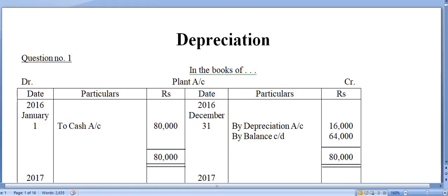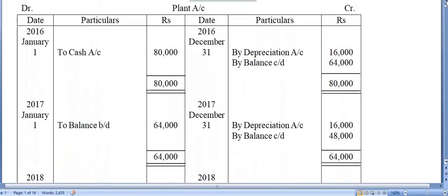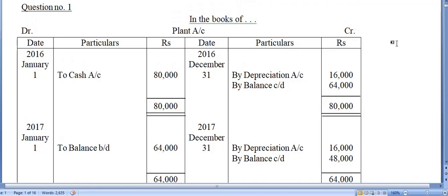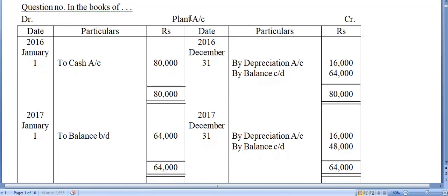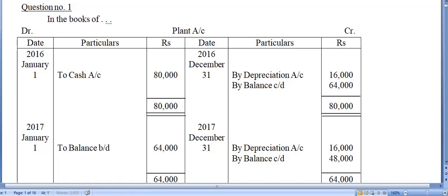So 80,000 into 20% — that is 16,000 — will be the annual depreciation. The books are closed on 31st December, and you need to show the plant account and depreciation account for three years. By 'plant', we mean the large machines — it's a combination of various machines, very heavy, and that's why it's called a plant.